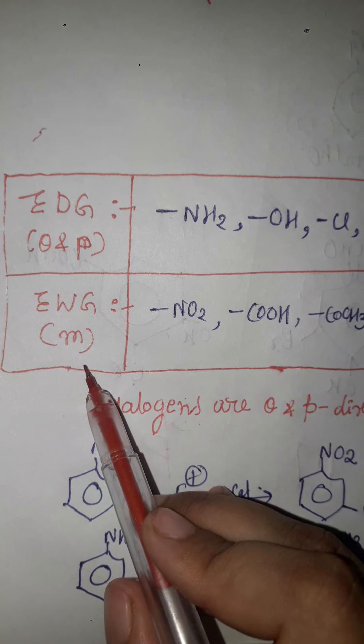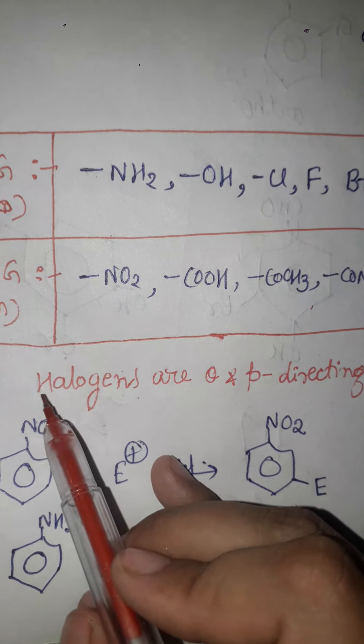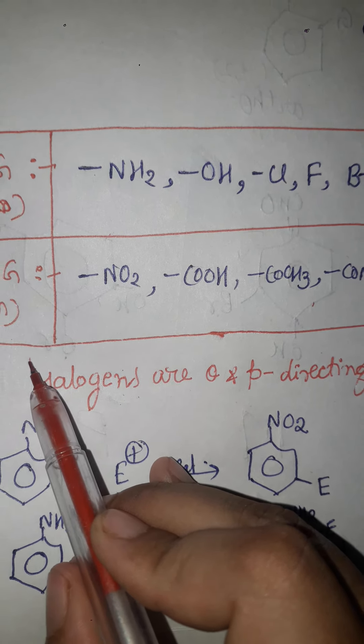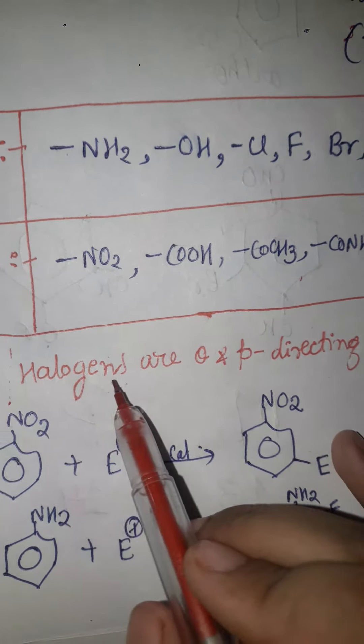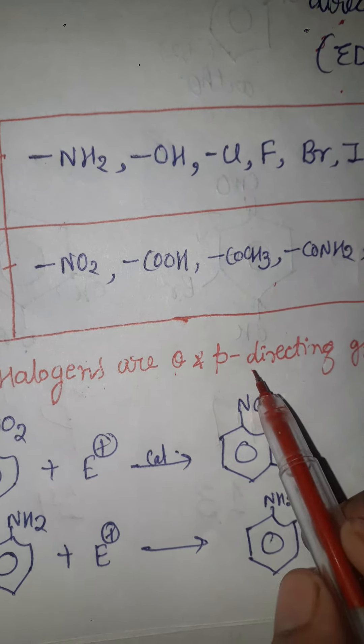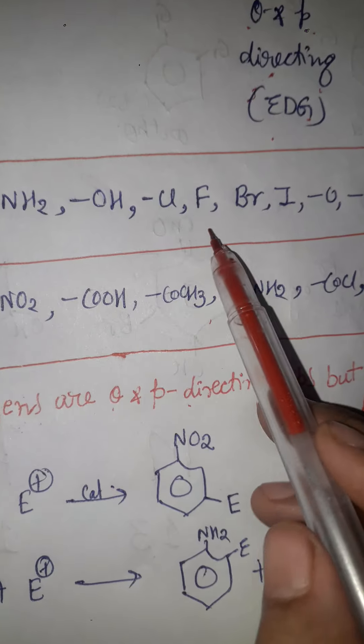Electron donating groups — which direct to ortho and para — include: amino (NH2), hydroxy (OH), chloro, bromo, fluoro, iodo, ether (OR), NHR, and alkyl groups such as methyl, ethyl, propyl, and butyl. Electron withdrawing groups — which direct to meta — include: NO2, CHO, COCH3, CONH2, COCl, CN (cyanide), sulfonic acid, and aldehyde.